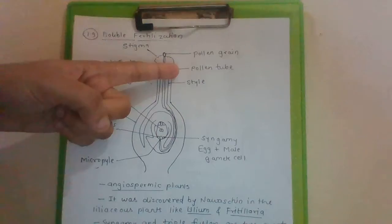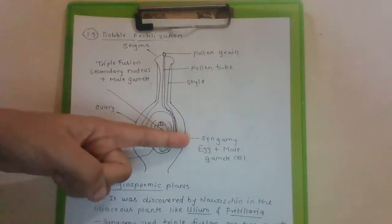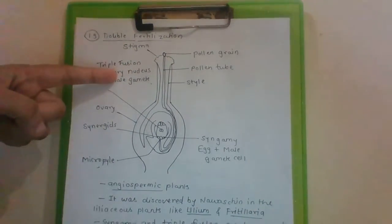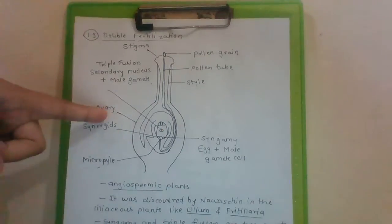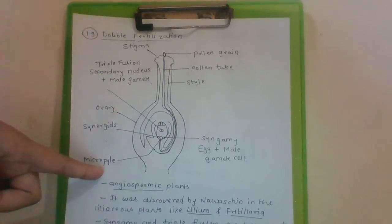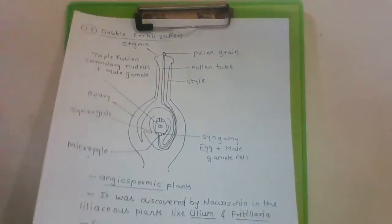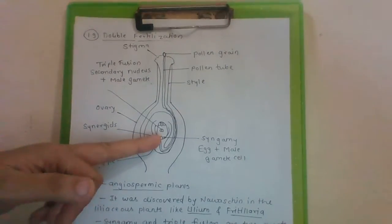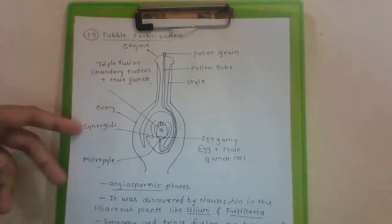Here it is pollen grain, pollen tube, style, stigma, triple fusion, ovary, synergids, micropyle and syngamy. This is micropylar end, this is chalazal end.